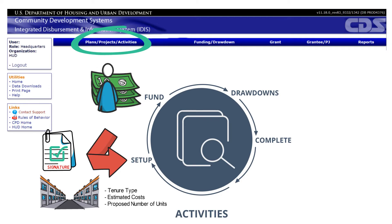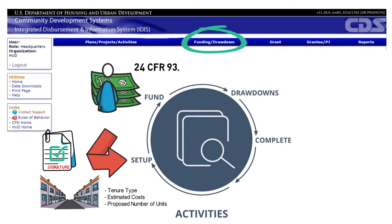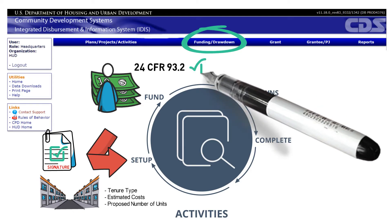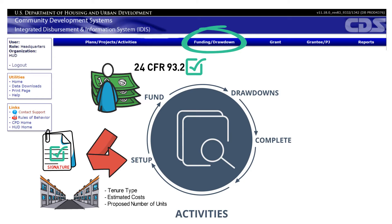Next is Activity Funding. Activities are funded in the Funding Drawdown tab. Grantees may only fund an activity in IDIS after executing a written agreement and ensuring that all commitment requirements in 24 CFR 93.2 have been met. This includes securing all the financing for the project and completing the necessary subsidy layering and underwriting. After an activity is funded, the funds can be drawn.